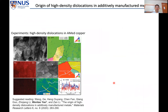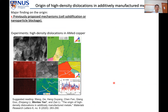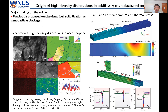In collaboration with Shanghai Jiaotong University, they found high-density dislocations in additively manufactured copper — two to three orders of magnitude higher than conventional samples. Previously proposed mechanisms like cell solidification or nano-particle blockage cannot explain this. Our simulation revealed tension-compression cycles of thermal stress as the origin of these high-density dislocations.